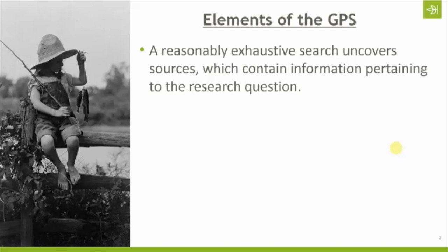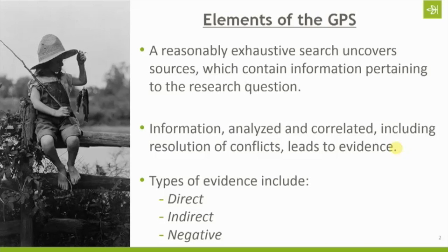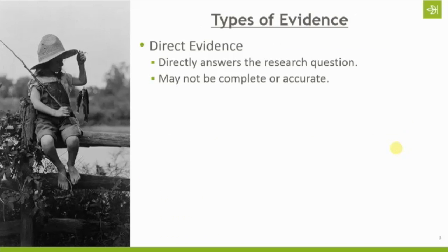Sources are just a container for information, so we're looking at the information contained in those sources. We take all of that information collected during the reasonably exhaustive search, analyze it, correlate it, and make sure we resolve conflicting information — and all of that leads us to evidence. Types of evidence include direct evidence, where the question we asked is answered by the information we've uncovered, indirect evidence, and negative evidence.